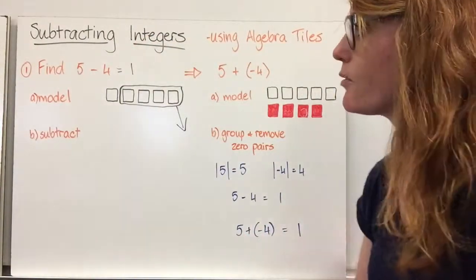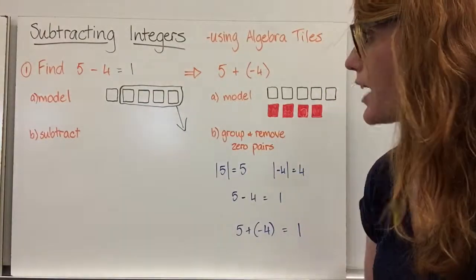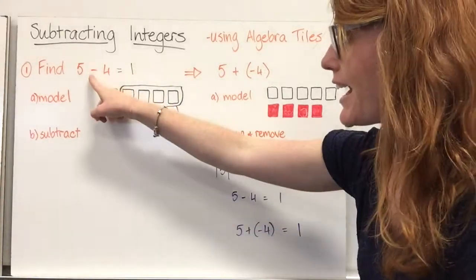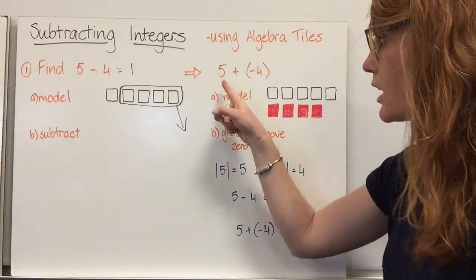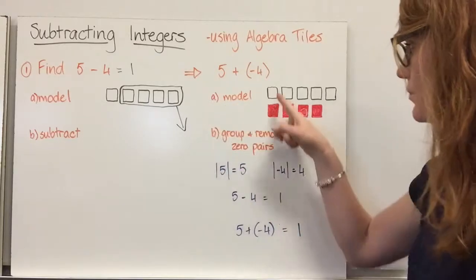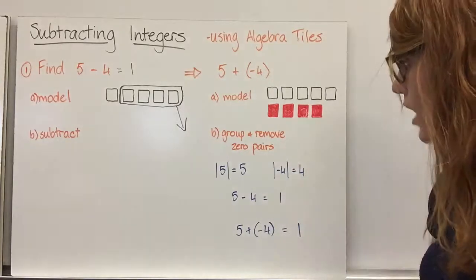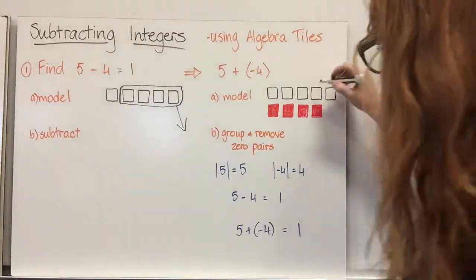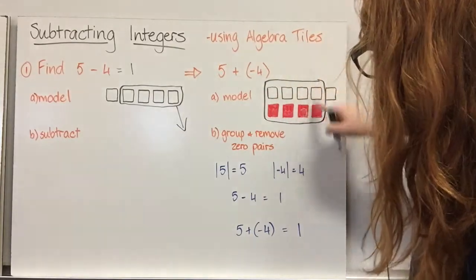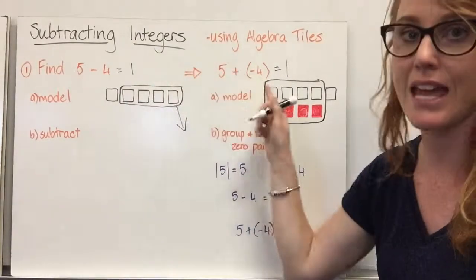Similarly, when we are subtracting an integer, we can instead add its opposite. So instead of five subtract four, we can add the opposite of four, which is negative four. Now we have five plus negative four. We model five positives and then add negative four. We group and remove the zero pairs — there are four zero pairs — and we are left with a positive one. We have the same answer.